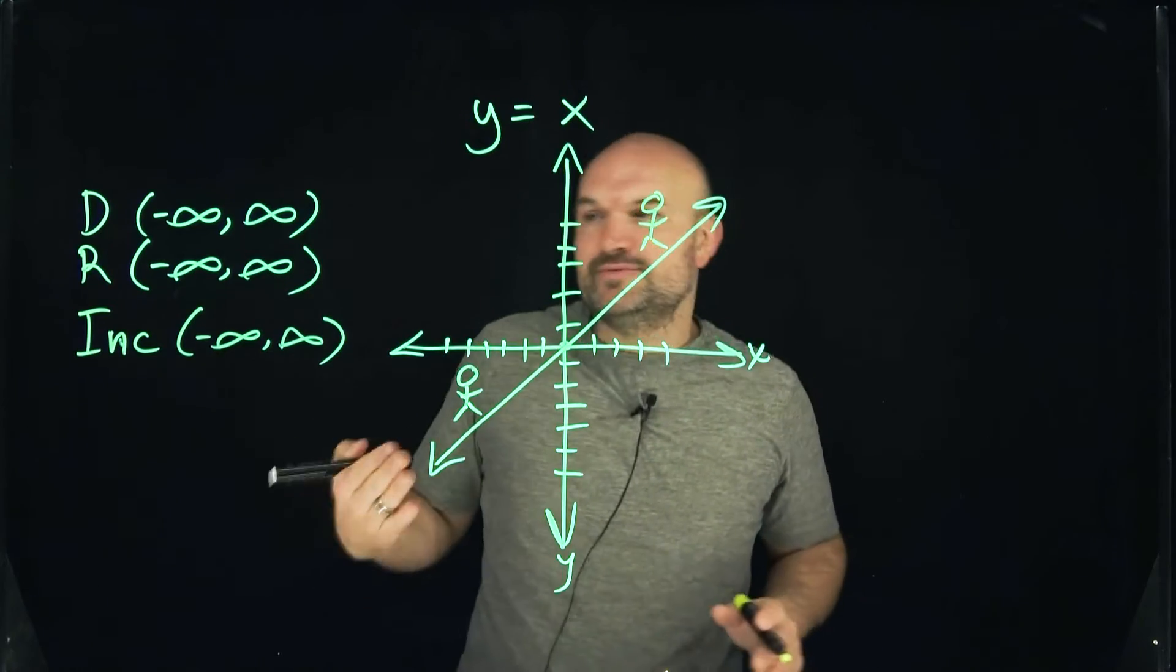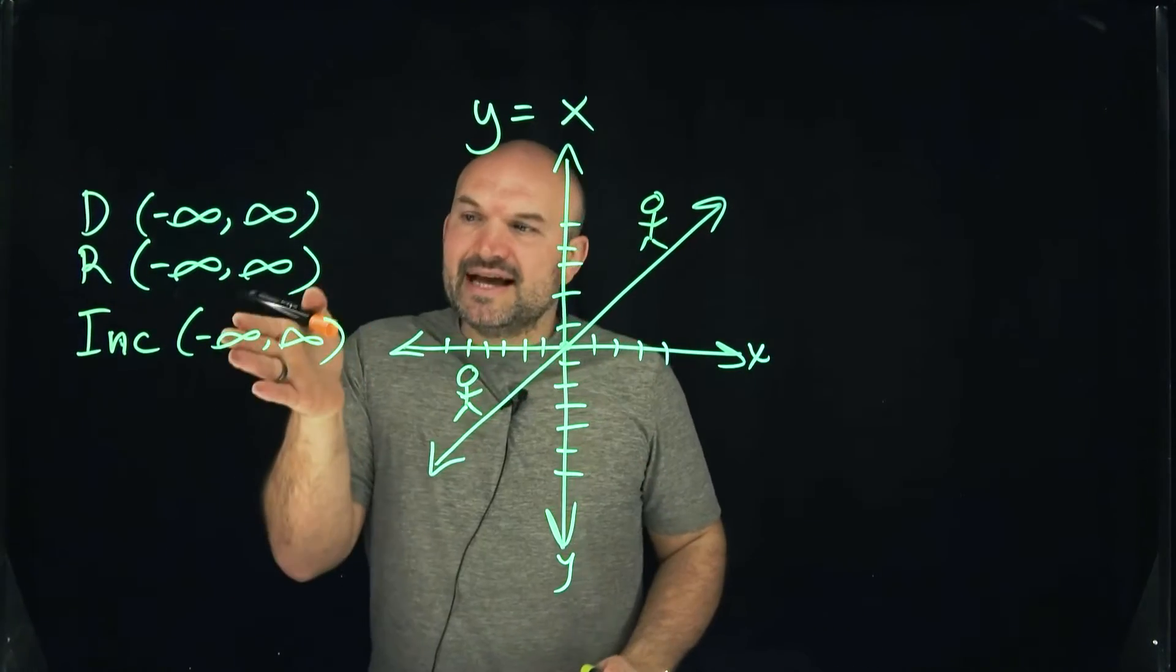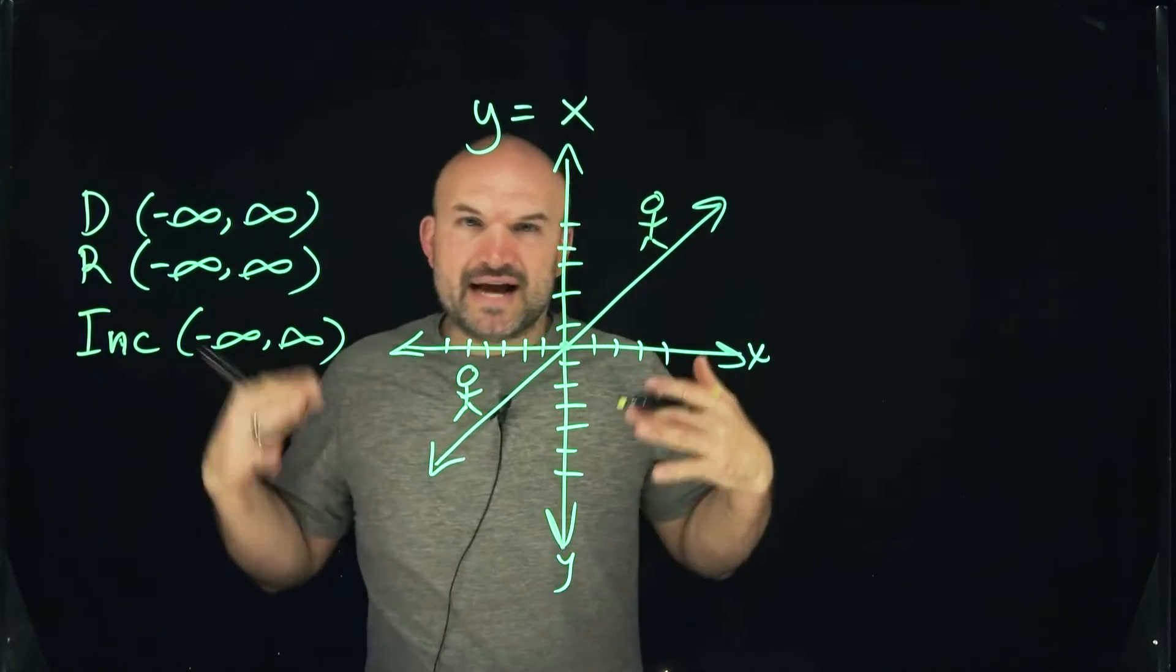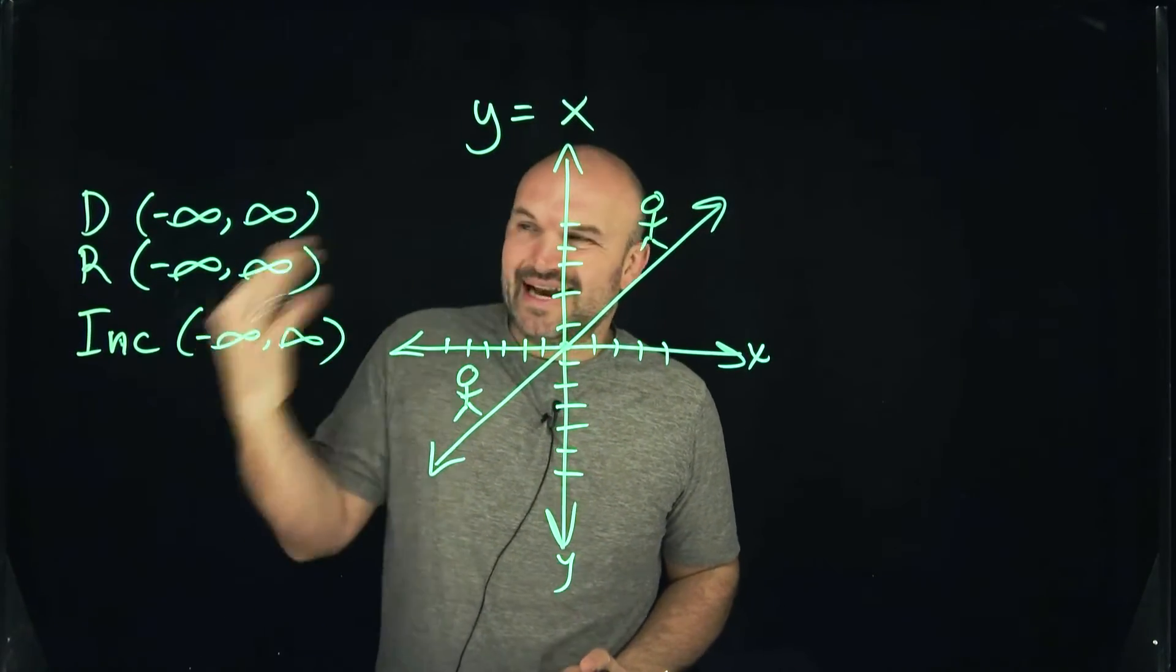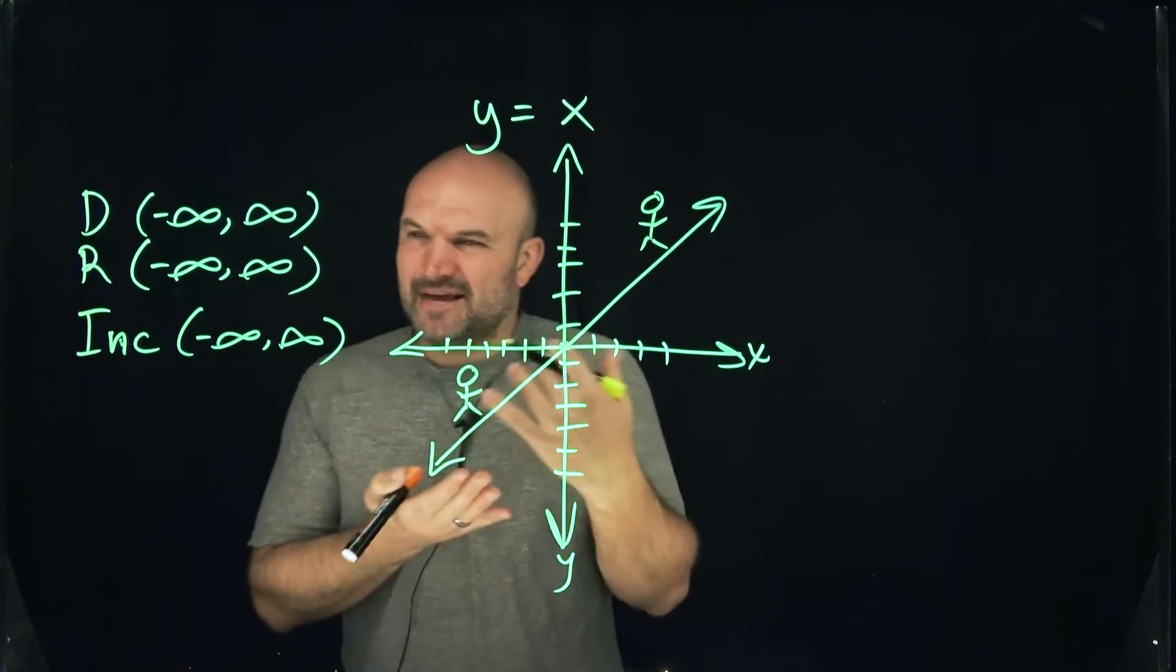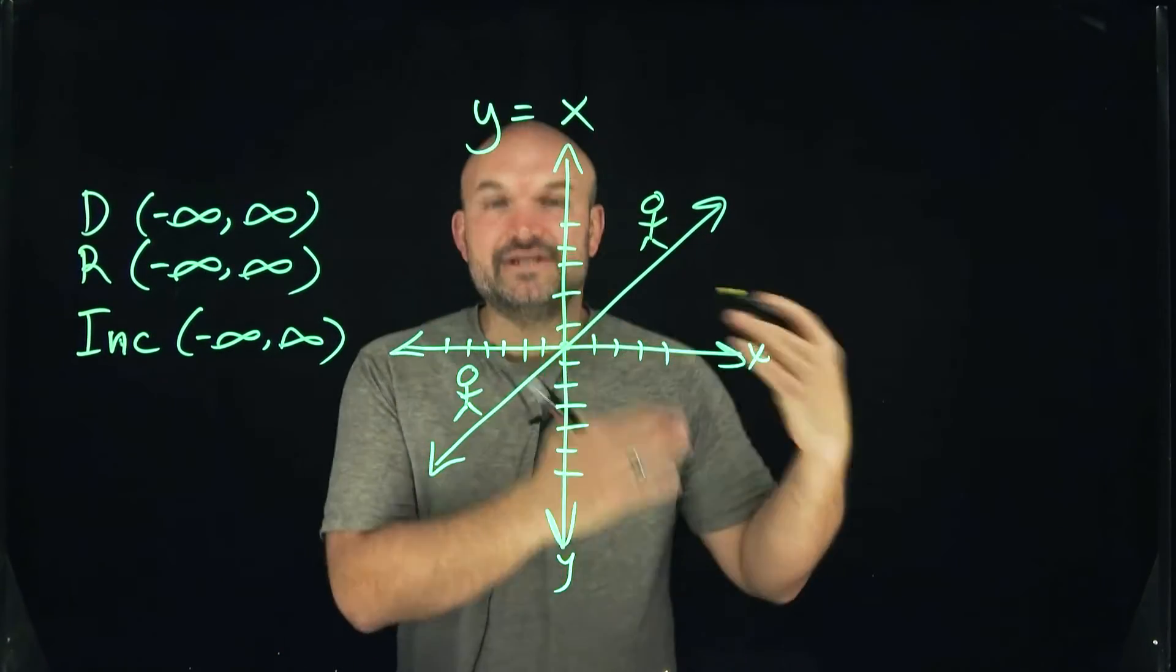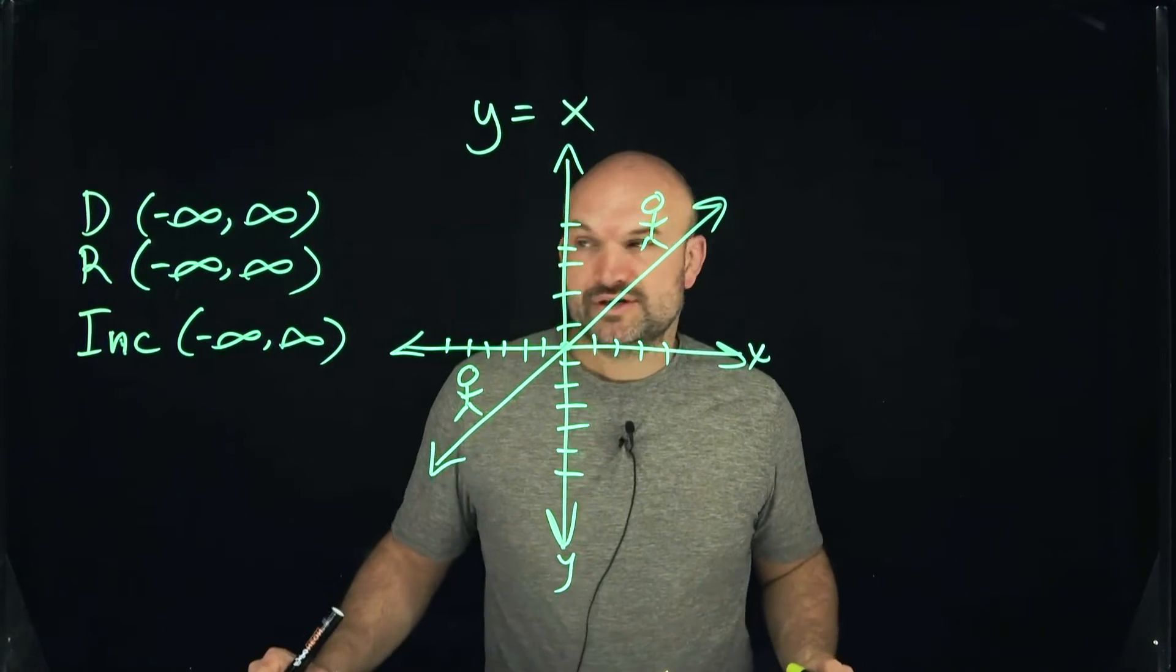We're not going to use included parentheses because when we're dealing with negative infinity and infinity, those are not actual values. You can't even be increasing or decreasing at a point—it's merely representing the interval that something is increasing or decreasing.